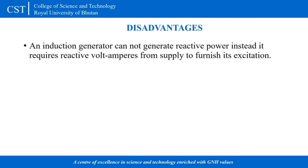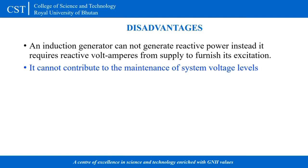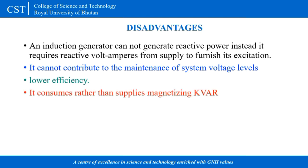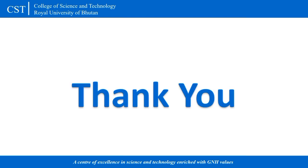The disadvantages include: an induction generator cannot generate reactive power — instead it requires reactive volt-amperes from the supply for its excitation; it cannot contribute to the maintenance of system voltage levels; and it has lower efficiency, consuming magnetizing current rather than supplying it.